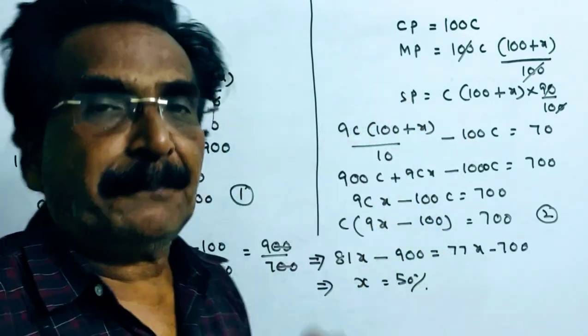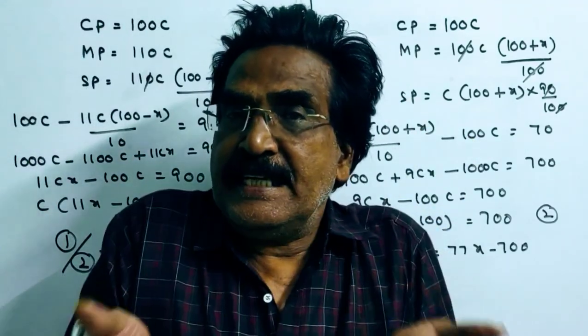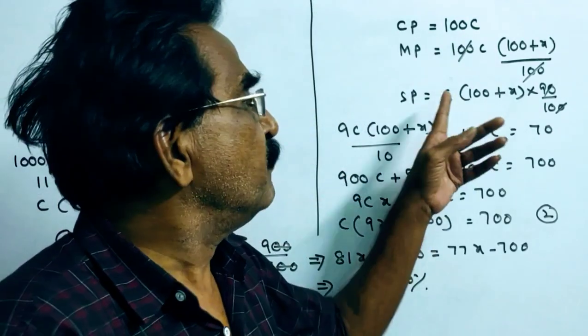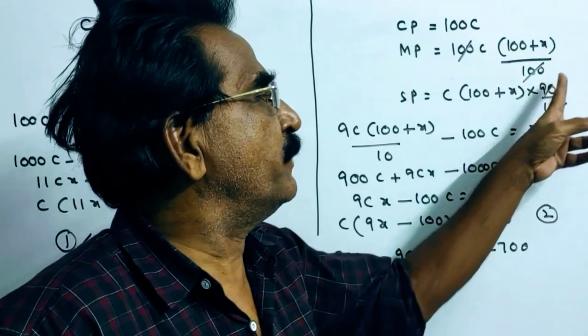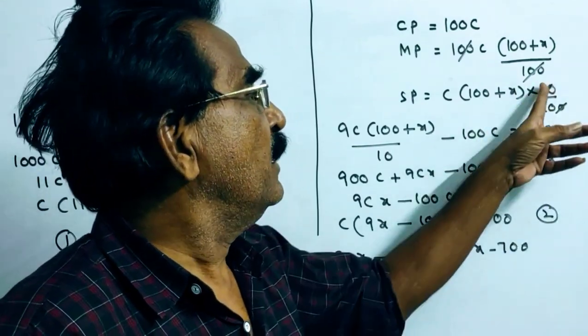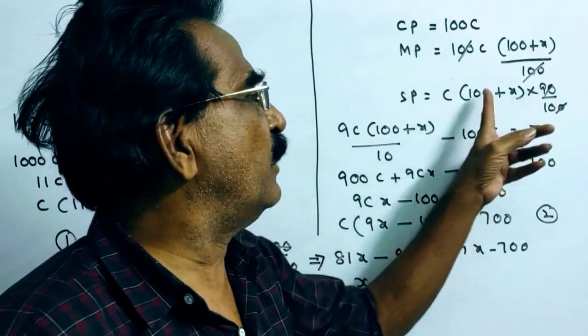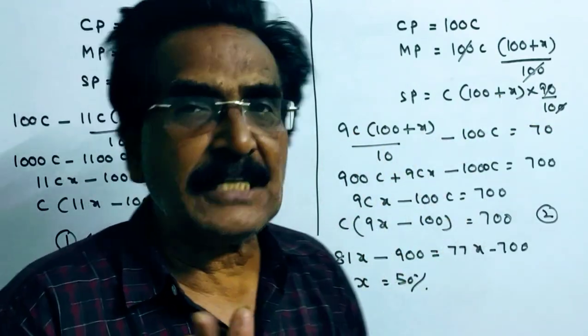Now the sold price is, here 10 percent discount is offered. Then the sold price will be C into 100 plus x into 90 by 100. So 9C into 100 plus x by 10. That is the sold price.